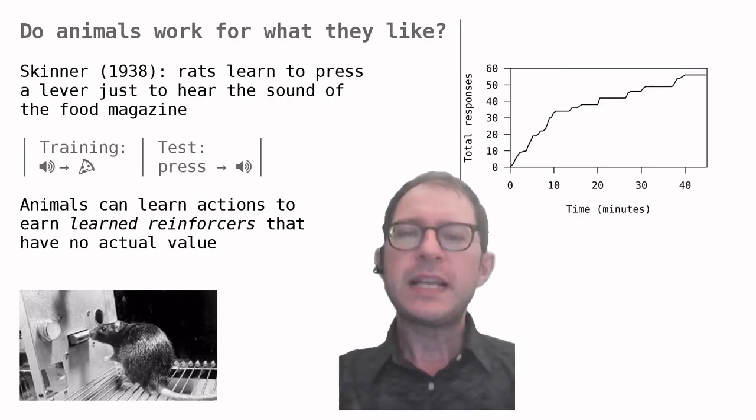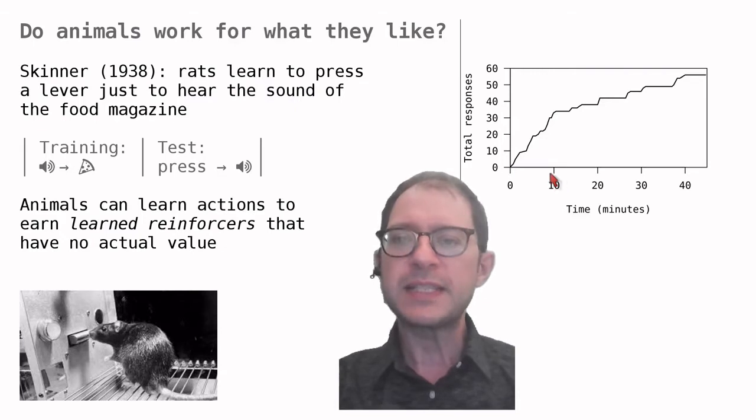Here are the results for one rat. The graph is a cumulative record, a graph that displays how many responses have been made up to a given time. We have seen this kind of graph already in our lesson on schedules of reinforcement. In this particular case, we can see that after 10 minutes, the rat had made about 30-35 responses. What the graph shows overall is that the rat pressed the lever many times, even if no food was being delivered.